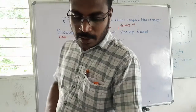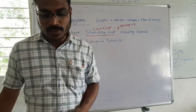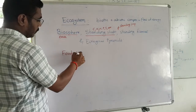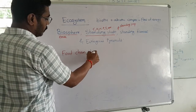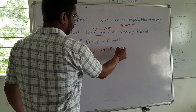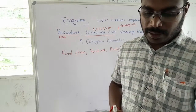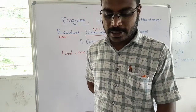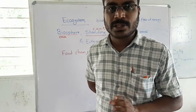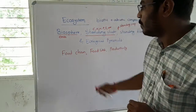Then we have to study food chain, food web, and productivity. In an ecosystem, various living organisms — whether they are plants or animals — are arranged in a definite sequence according to their food habits, and such a sequence is called a food chain.